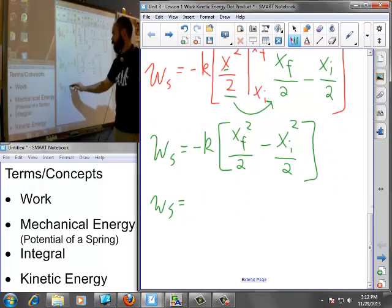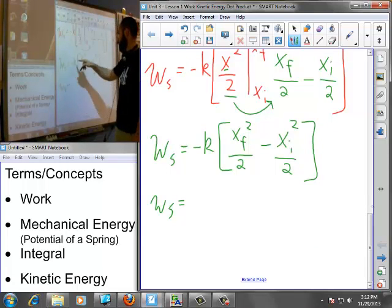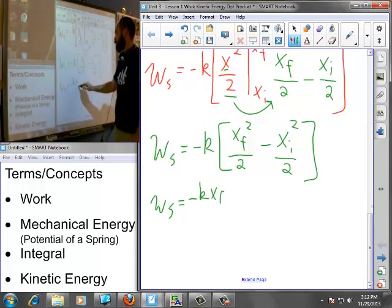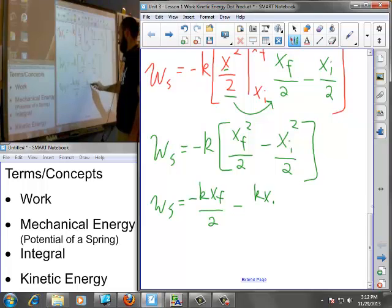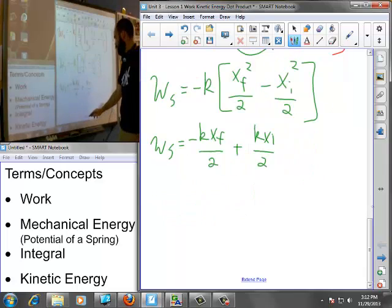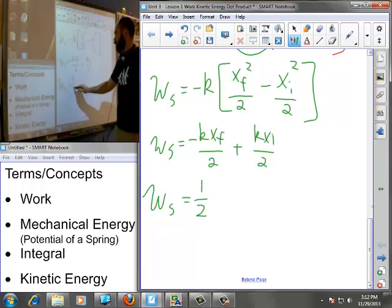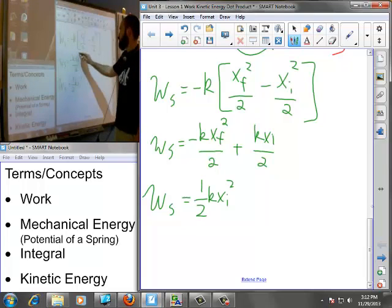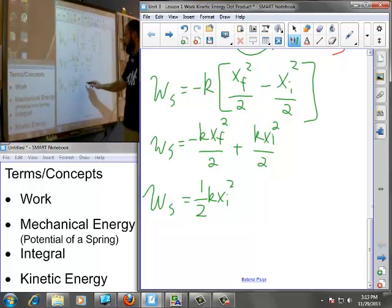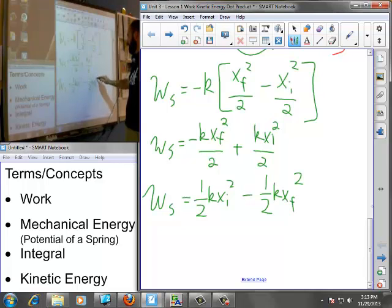Or if I want to break it down further, I'll distribute my negative k. Negative kxf squared would be negative kxf squared divided by 2, and then negative kxi squared divided by 2. Actually, positive, because negative times negative. So the work done by a spring is actually one-half kxi squared, I'm sorry, I forgot to put my squares in there, minus one-half kxf squared. There we are.